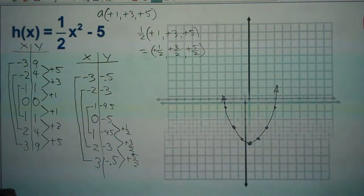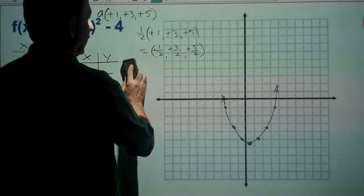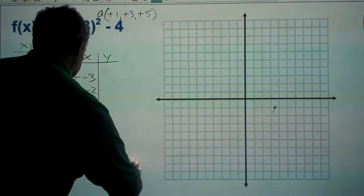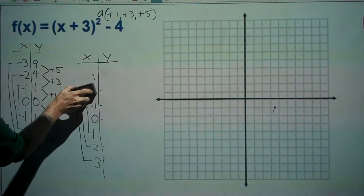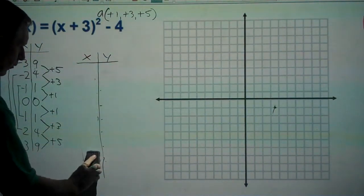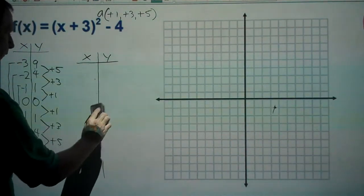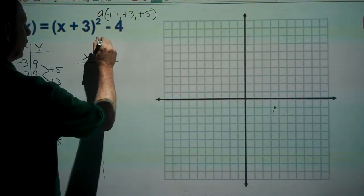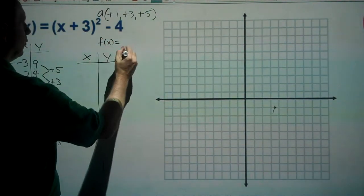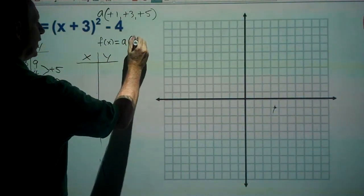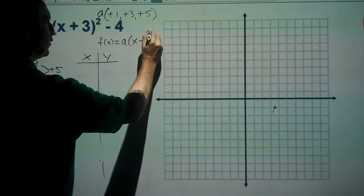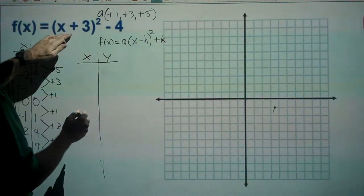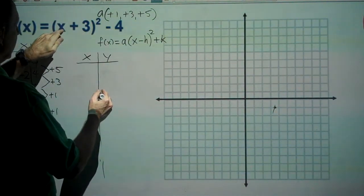This parabola is wider than the parent function because of the coefficient of one half out front. Next we have a function in vertex form. Vertex form is helpful because it gives us the vertex coordinates directly. The vertex form is f(x) = a(x − h)² + k.